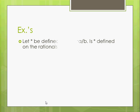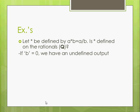Okay, so some examples of binary operations. We're going to define star this time to be a over b. So we're dividing a and b. And the question is, is star defined on the rationals? Well, you can think about it for a moment if you want. But if b is zero, which is a rational number, then we have an undefined output. So star is not defined over the rationals.